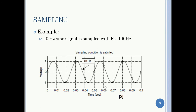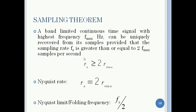This plot shows how we can obtain samples from a continuous time analog signal. In the present example, a 40 Hz sinusoidal signal is sampled with a sampling frequency of 100 Hz. According to the sampling theorem, a band-limited continuous time signal with the highest frequency component fmax can be uniquely recovered from its samples, provided the sampling rate is greater than or equal to twice the maximum frequency component. Thus, the Nyquist limit or folding frequency is half of the sampling frequency.